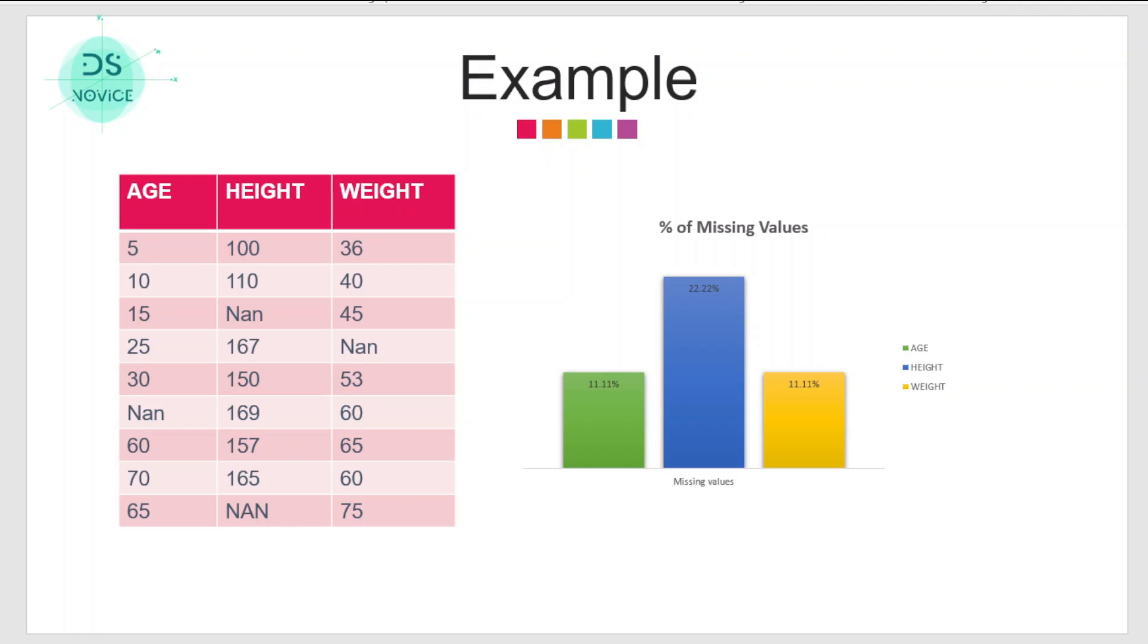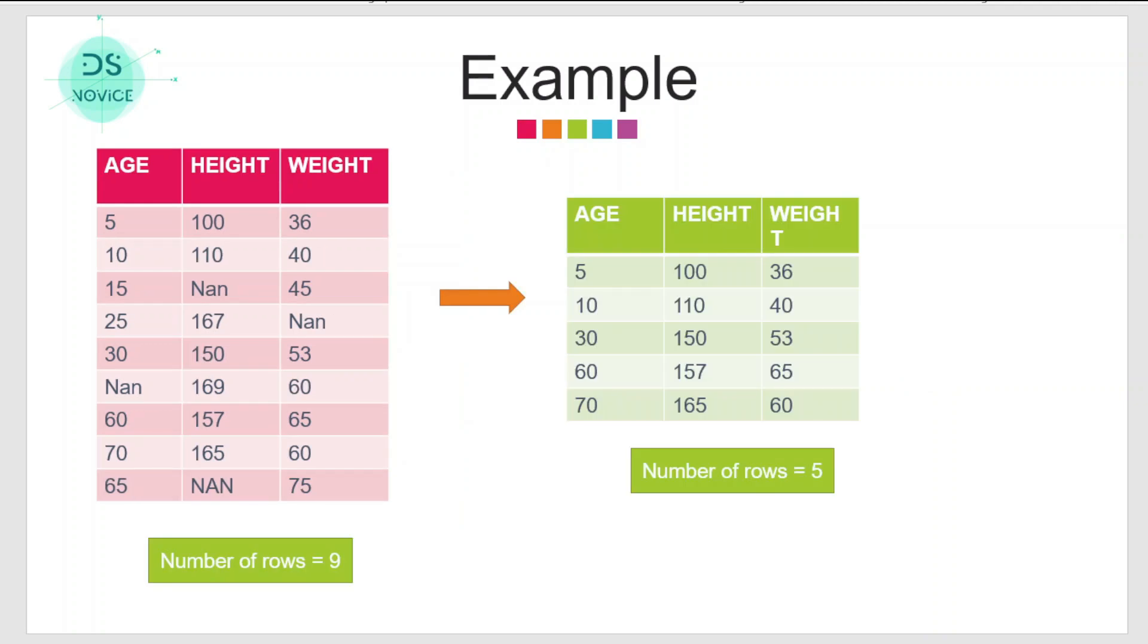After applying this technique, we see that earlier we had nine observations but after this technique we are only left with five observations. If we do the math, approximately 44 percent of the data is lost. We have almost lost half of the information. Mind you, no column had missing values more than 22 percent, but the resulting effect of all the columns caused the data loss so much. Now you can see how this technique can cause problems sometimes, like if you are doing linear regression or classification on a small set of data you cannot apply this technique.